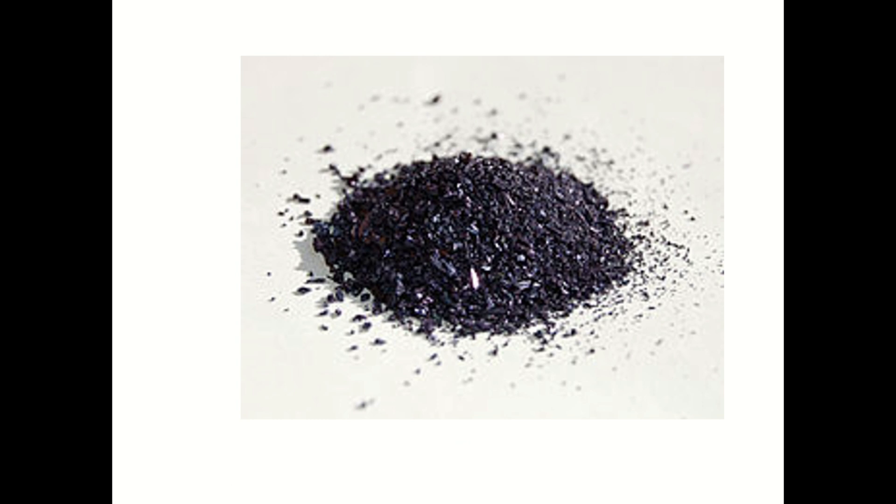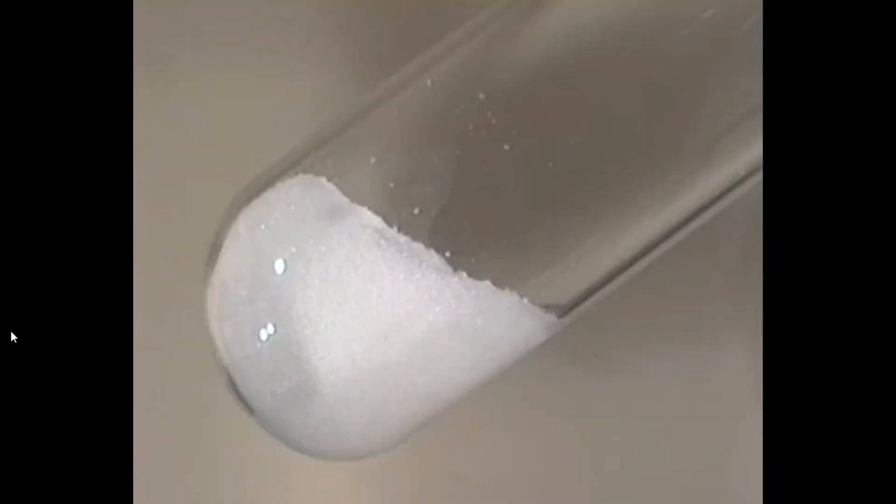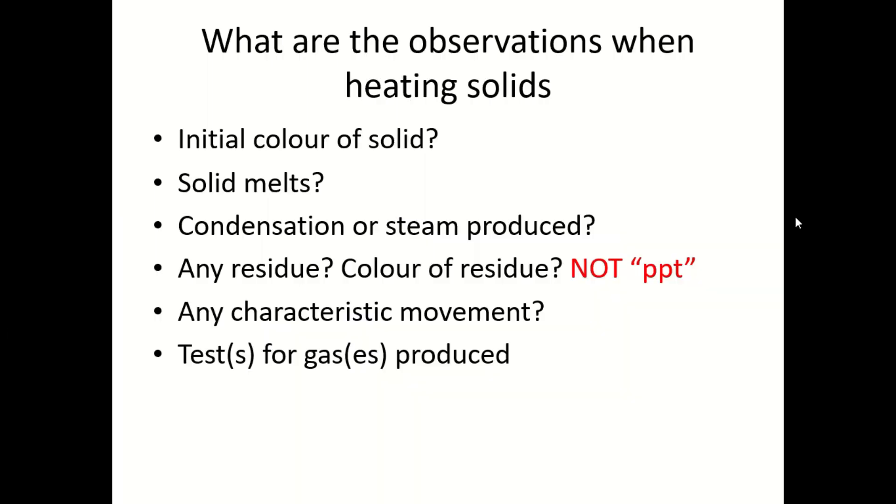Initial color means you describe the color of the solid before heating. Second question will be does the solid melt? Let's show you a video on how heating a solid makes the solid melt. If you observe a solid melt upon heating, please write solid melts.